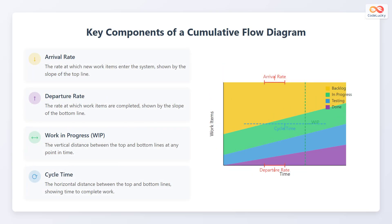Let's discuss the key components of a cumulative flow diagram. First is the arrival rate — the rate at which new work items enter the system, shown by the slope of the top line. Next is the departure rate, the rate at which work items are completed, shown by the slope of the bottom line.